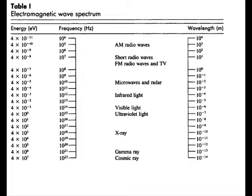The third text column lists, from top: AM radio waves, short radio waves, FM radio waves, TV, microwaves and radar, infrared light, visible light, ultraviolet light, and then X-ray. X-ray is our fundamental concern — it is a specific band of frequencies and wavelengths, and photon energies are usually between 20 kilo electron volts and 150 kilo electron volts.